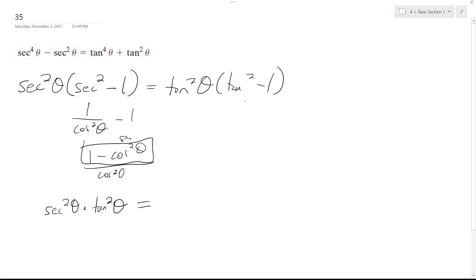And over here, tangent squared is equal to sine squared theta over cosine squared theta minus cosine squared theta over cosine squared theta. So we end up with sine squared theta.